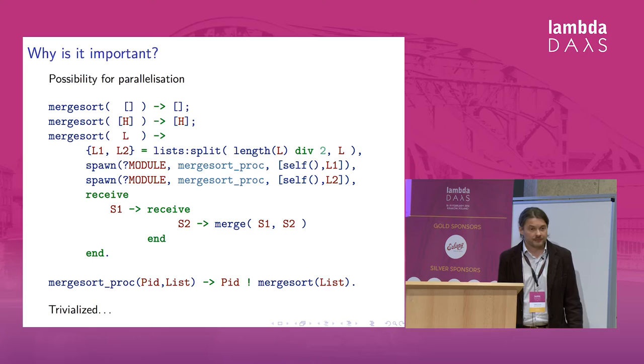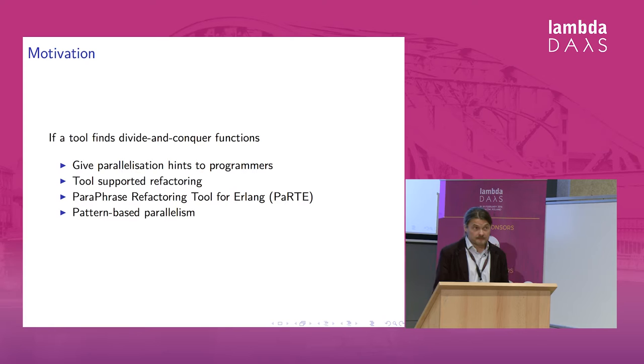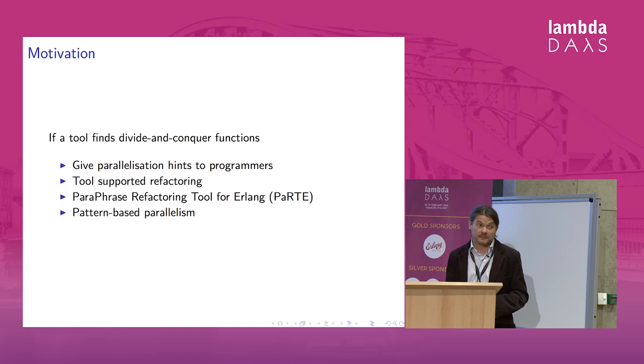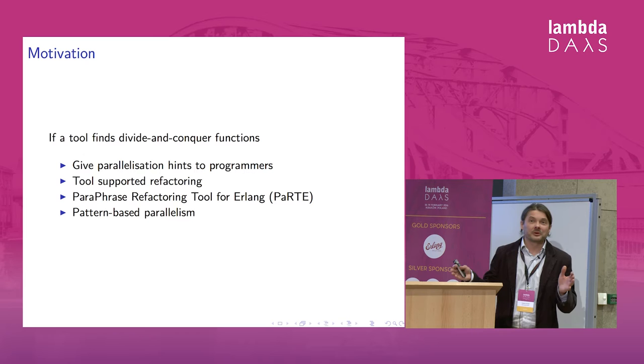Our motivation is to develop a tool which is able to find divide and conquer functions, and then use this tool to give hints to programmers then to introduce parallelism into the code. And then, if this tool exists, we can use this tool to perform the refactorings that actually take those pattern candidates and transform them into instances of algorithmic skeletons. So there is a big tool chain, and I'm only going to talk about the first step in this tool chain.